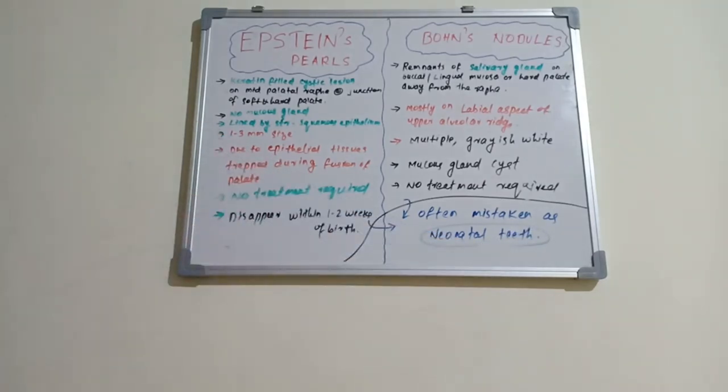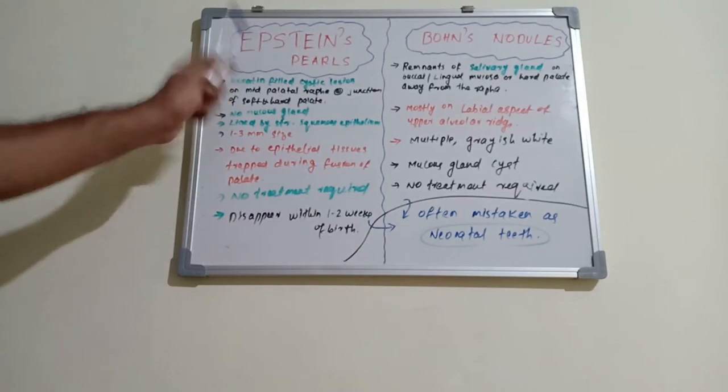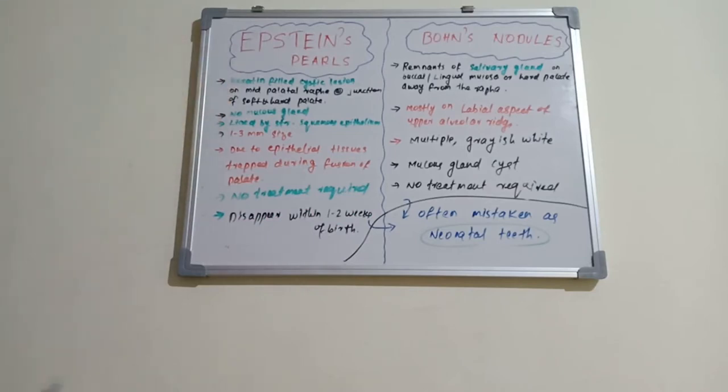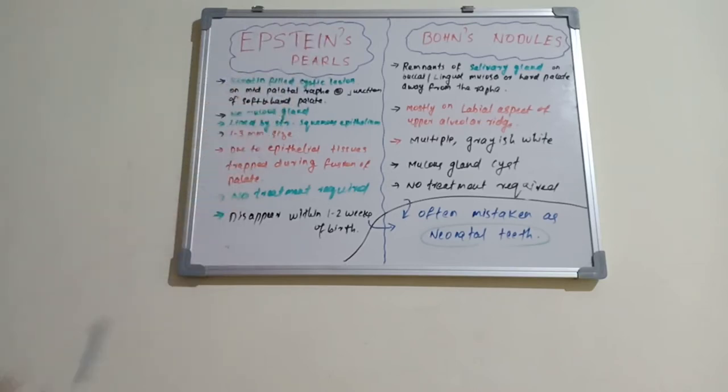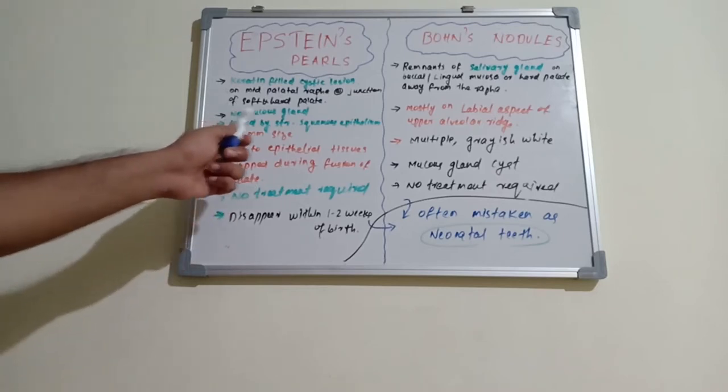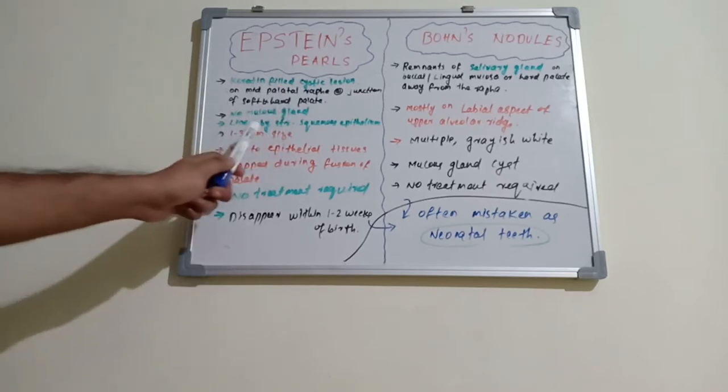Let's move on to Epstein pearls. They are keratin-filled cystic lesions which are seen on the mid-palatal raphe at the junction of soft and hard palate. They are keratin-filled cystic lesions mostly seen on the mid-palatal raphe and there is no mucous gland. They are lined by stratified squamous epithelium.